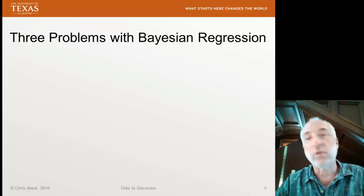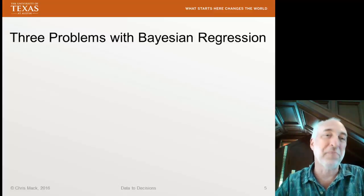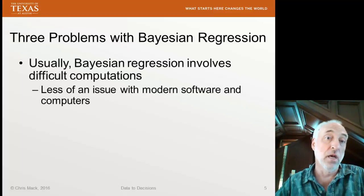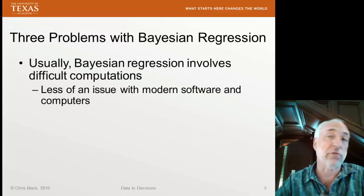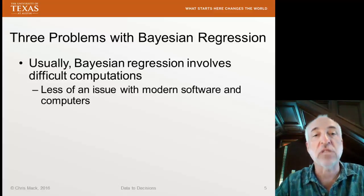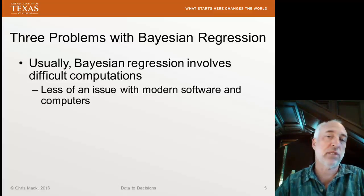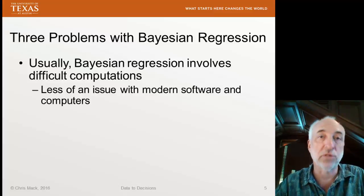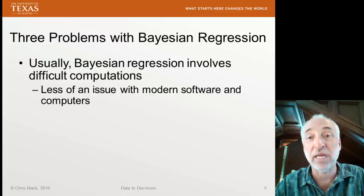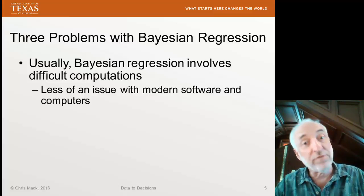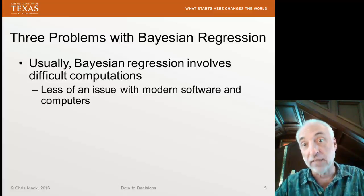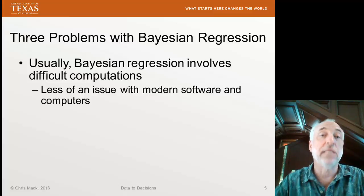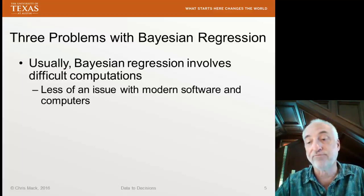There are three basic difficulties when doing Bayesian regression. First of all, Bayesian regressions are computationally intensive. With lots of good software and powerful computers like we mostly have today, this is often not a big issue, but with fairly complicated models with lots of regressors and a fair amount of data, these computations can take a long time.